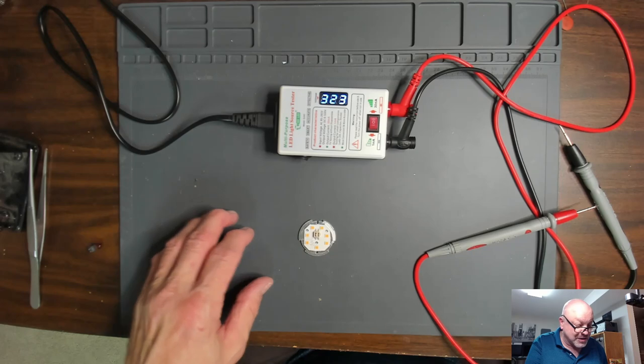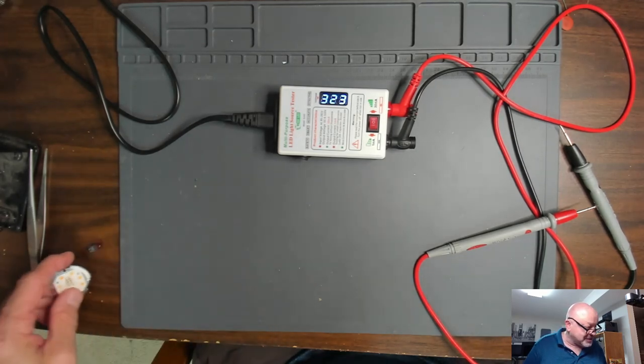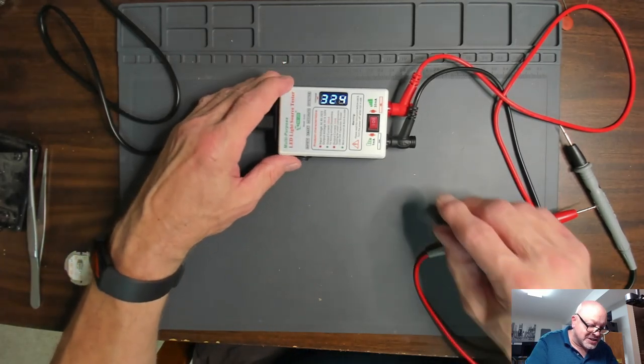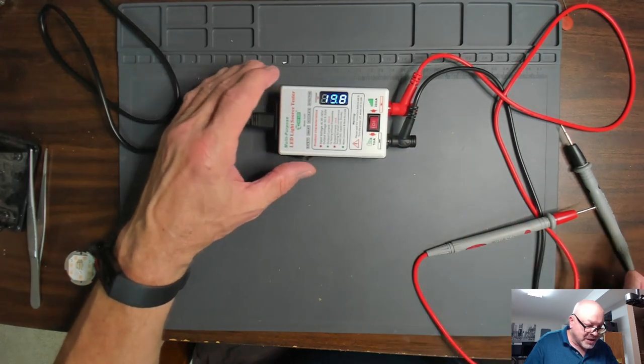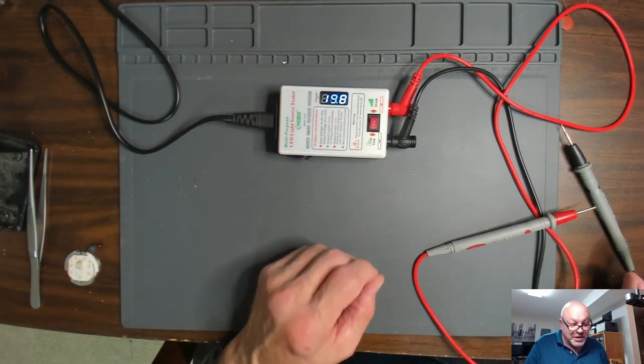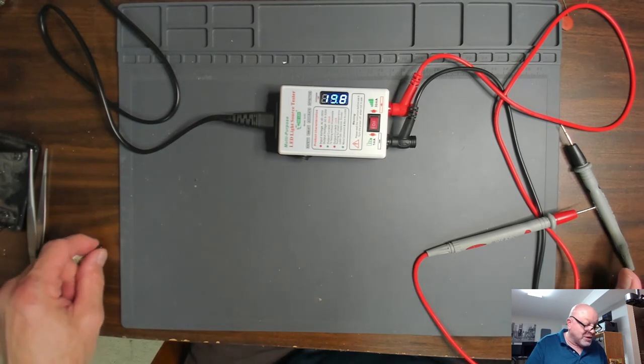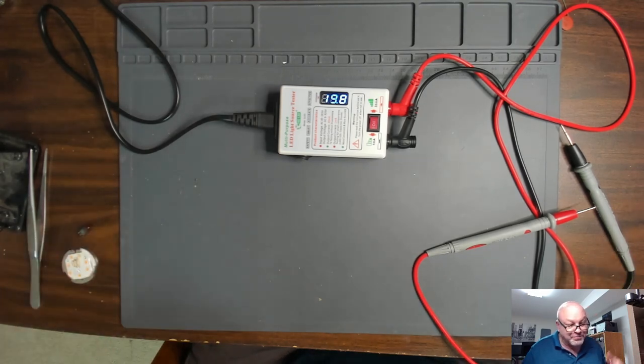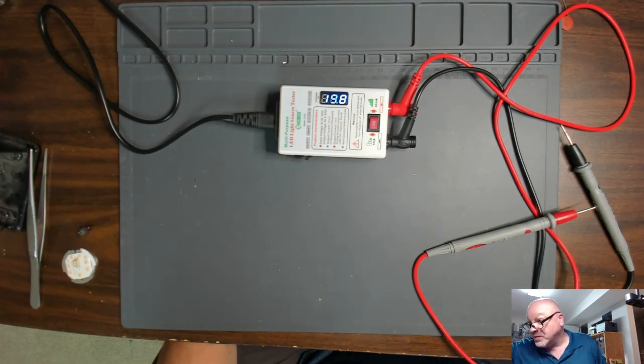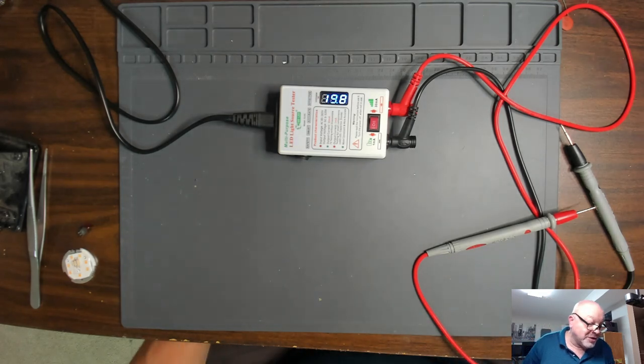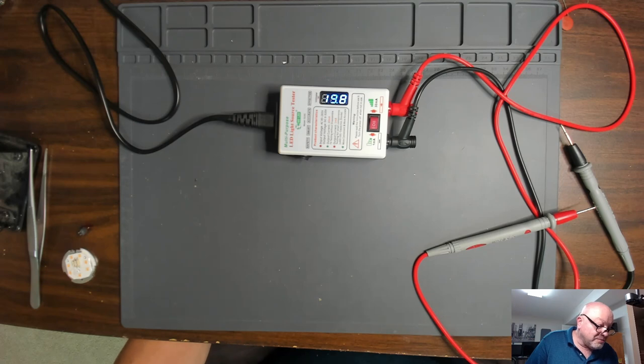But here's the interesting setting on this particular unit. I'll switch this off and I'll switch it to 1 milliamp. And what you would use this for is it wouldn't be able to light an LED, so if I'd hook it up, the LED won't light because 1 milliamp just isn't enough to light an LED. But what it works really good on is to test zener diodes.